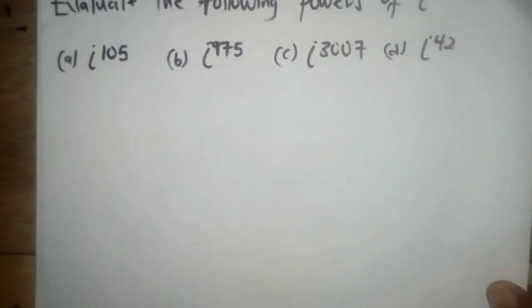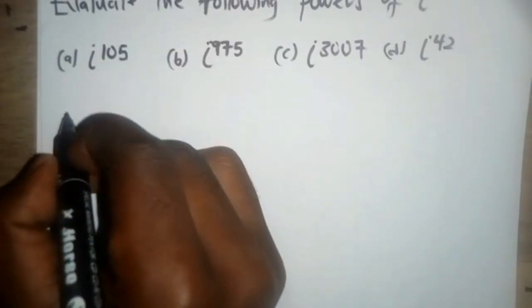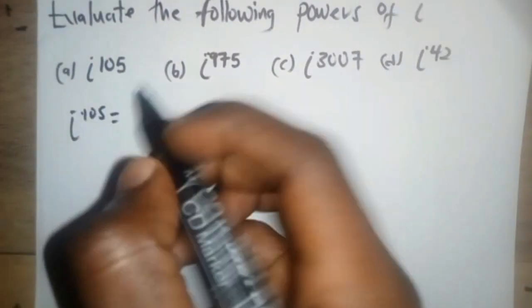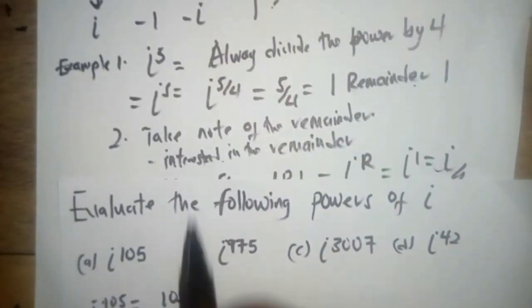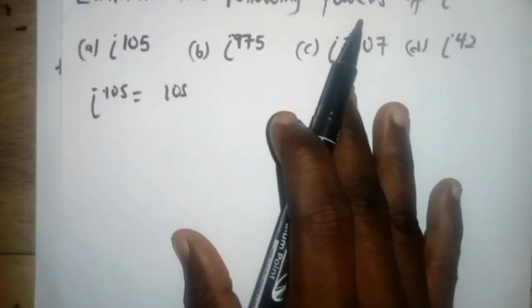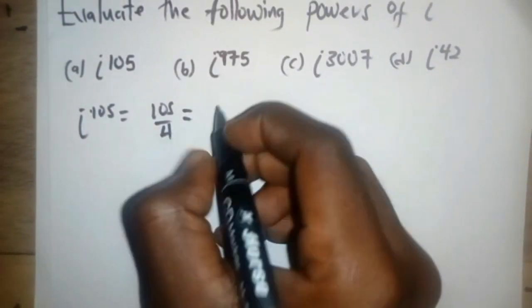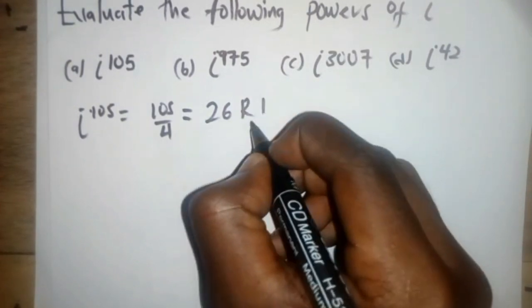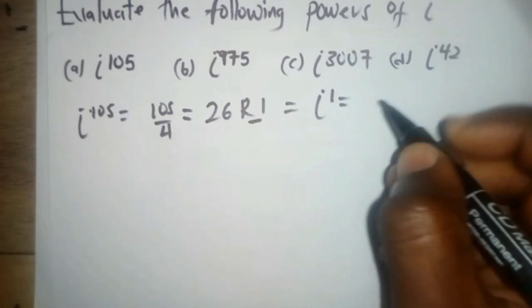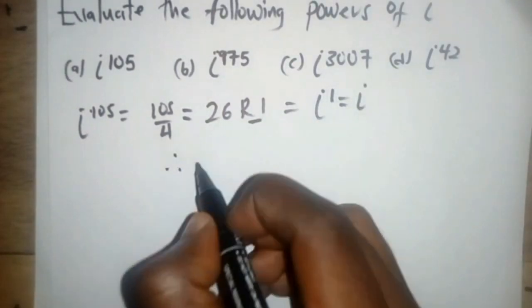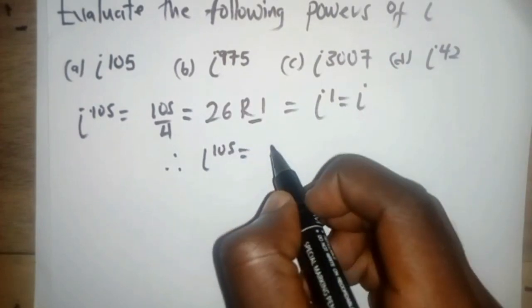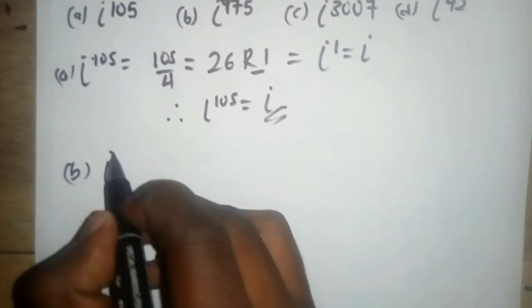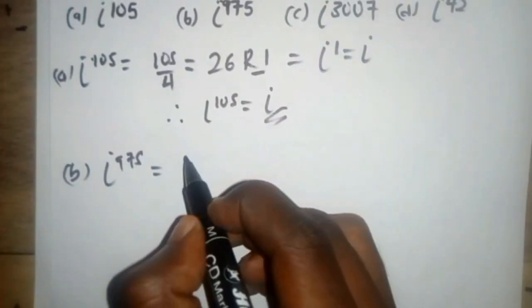Now let's evaluate the following powers of i. First: i to the power 105. We always divide the power by four. 105 divided by four gives 26 with a remainder of one. So we have remainder one, meaning i to the power 105 equals i to the power one, which is i.